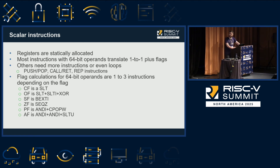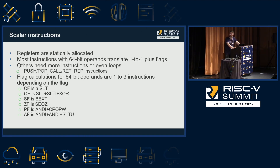Most x86 instructions that use 64-bit operands generally translate one-to-one, plus any flags that you need to calculate. Flag calculations with 64-bit operands are 1 to 3 instructions. If you don't have 64-bit operands and you have 16 or 32-bit operands, you may need to either zero-extend or preserve the upper bits, so you might need more instructions for those, and the same goes for the actual instruction itself.